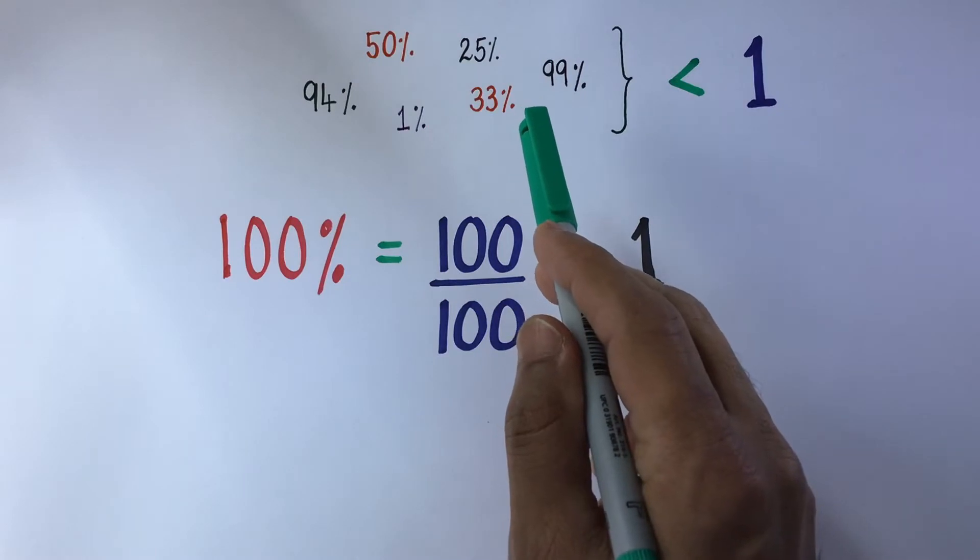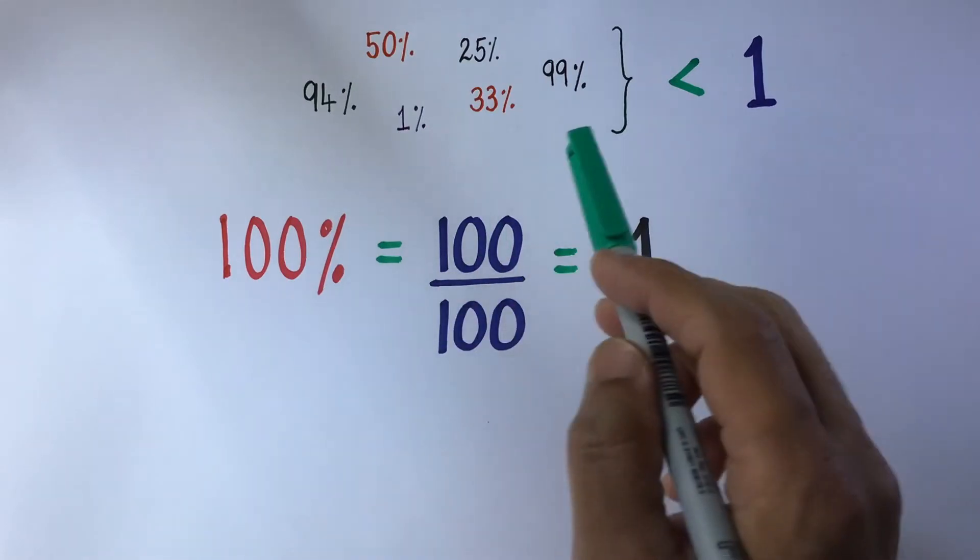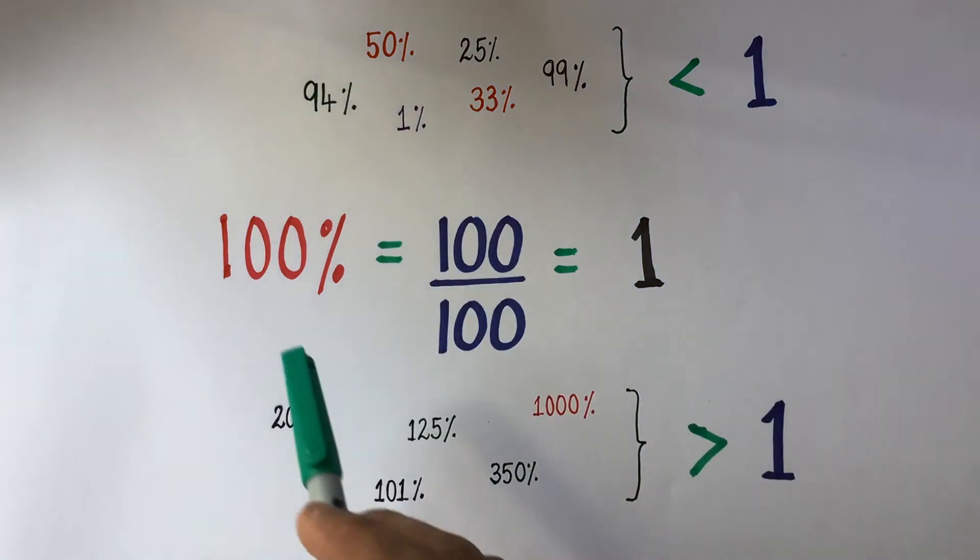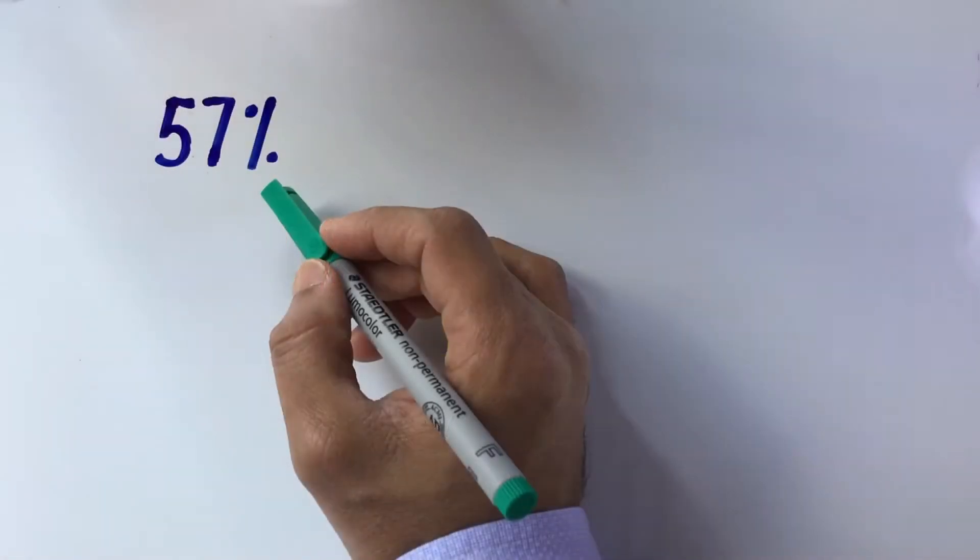So any percentage which is less than 100% will always be less than 1. Likewise any percentage which is greater than 100% will always be greater than 1.